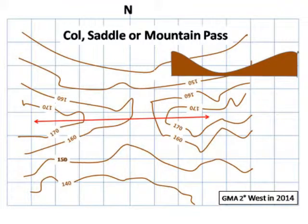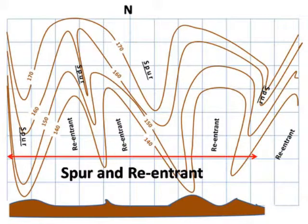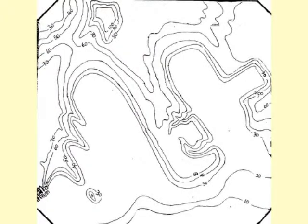Further patterns include a flat-topped hill or plateau, a col, saddle, or mountain pass, and the spurs of higher ground jutting out onto areas of lower ground. The spaces between the spurs are called re-entrants.